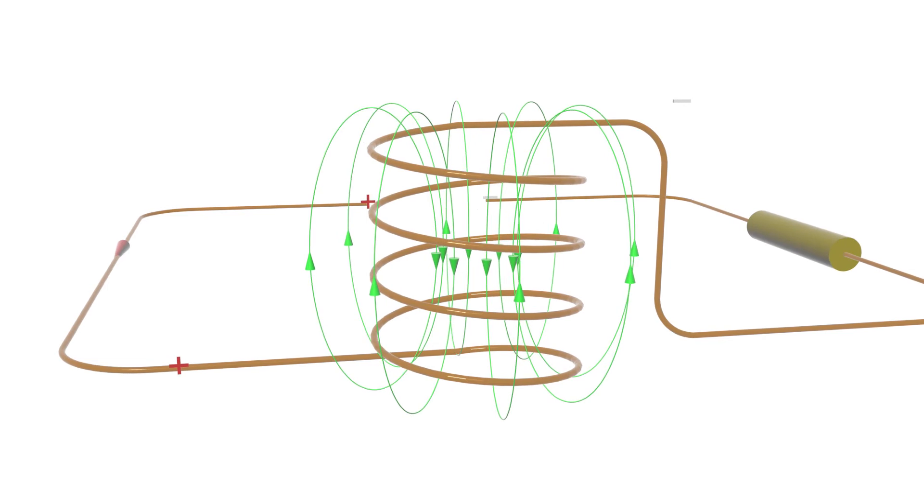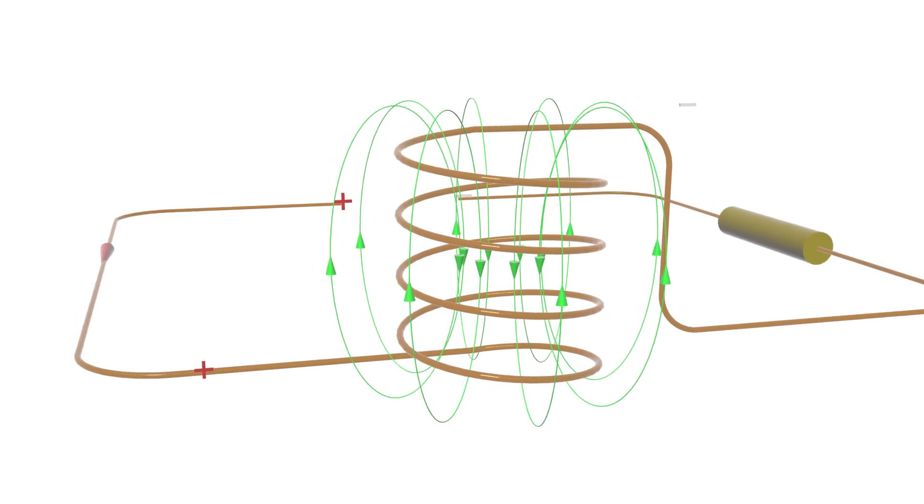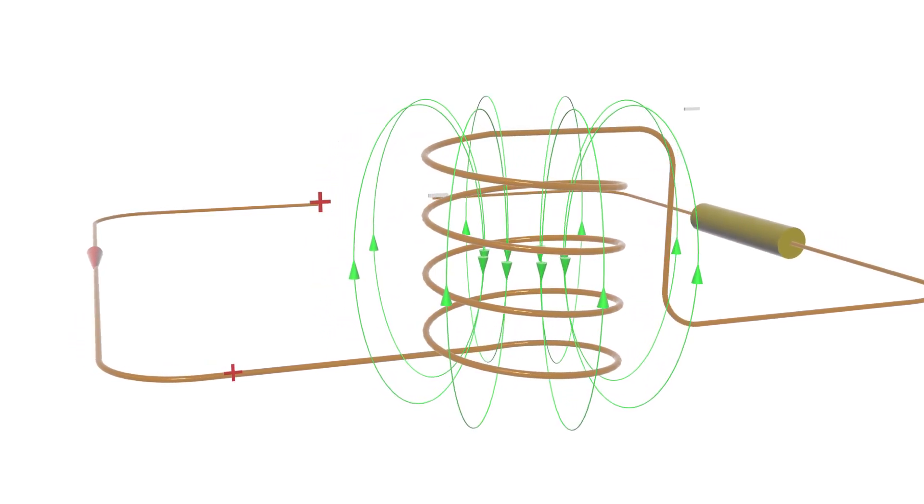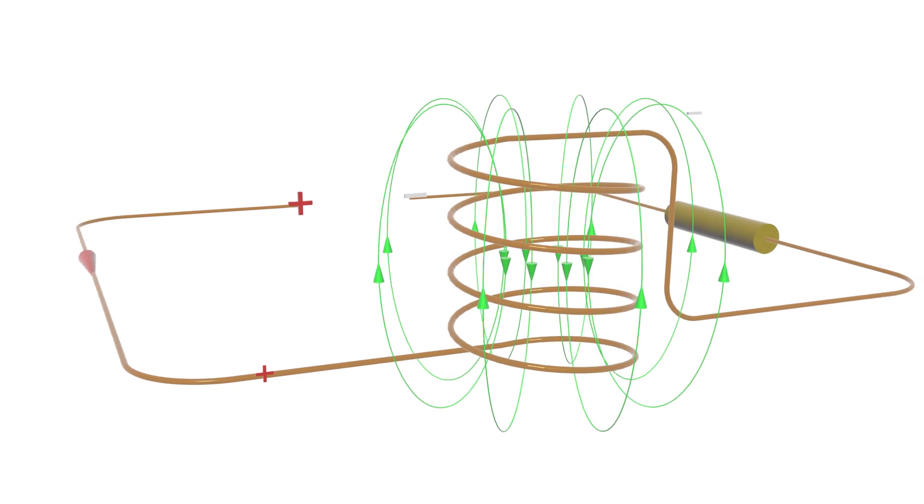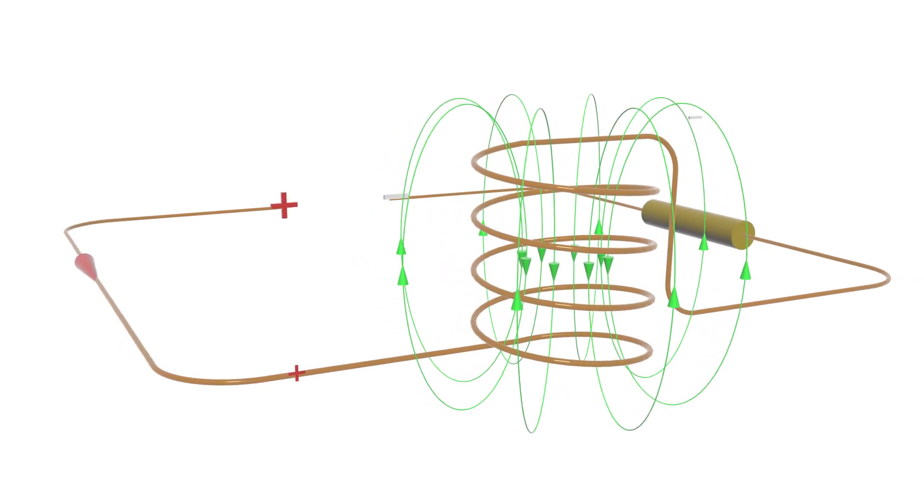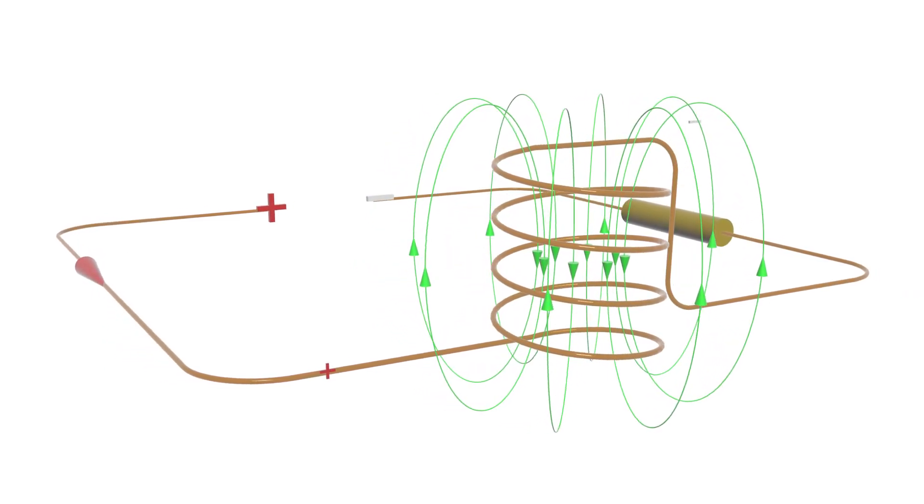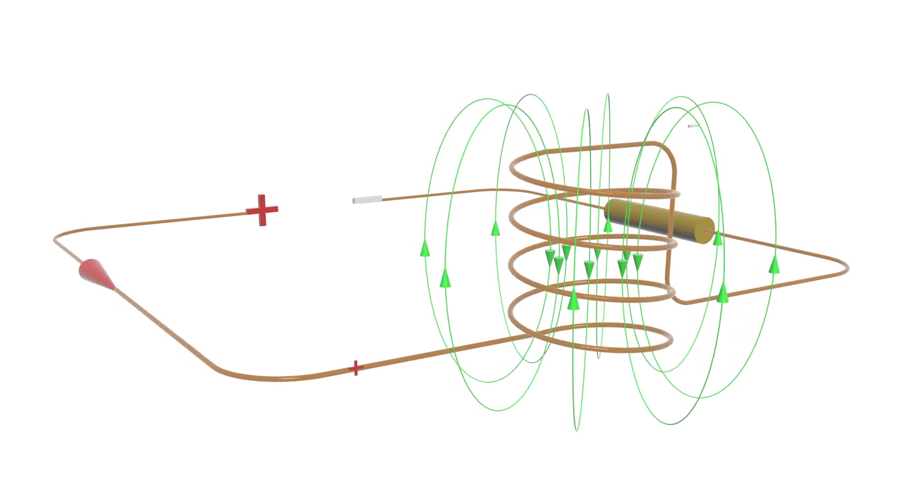If we progressively increase the voltage of the power source, the current will start to increase, generating a variable magnetic flux. Due to this, a voltage will be induced in the inductor. This phenomenon is called auto-induction.